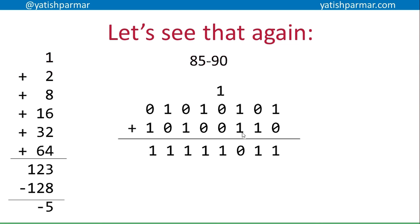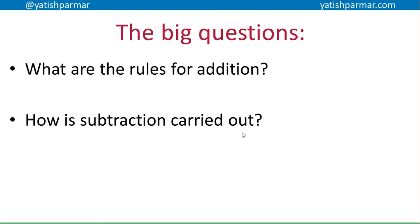So subtraction is quite easy to do using two's complement. To recap: the rules for addition are zero plus zero is zero, one plus zero is one, and one plus one is zero carry the one. Subtraction is carried out by simply using two's complement and adding the numbers together. Thank you very much — watch out for the next video on normalizing floating point numbers.